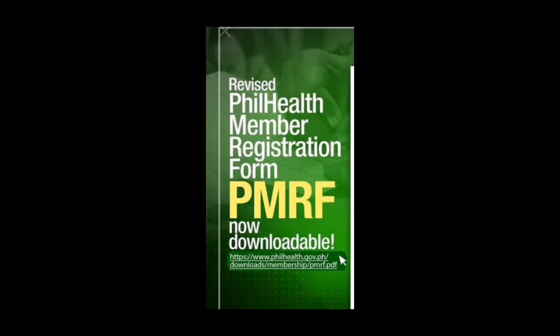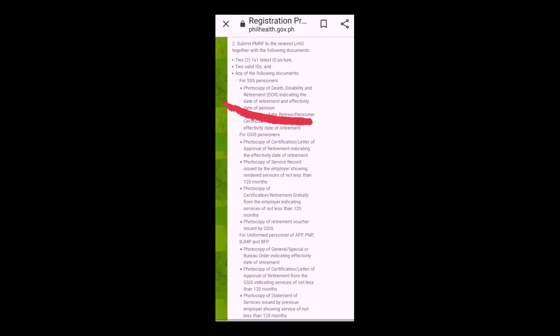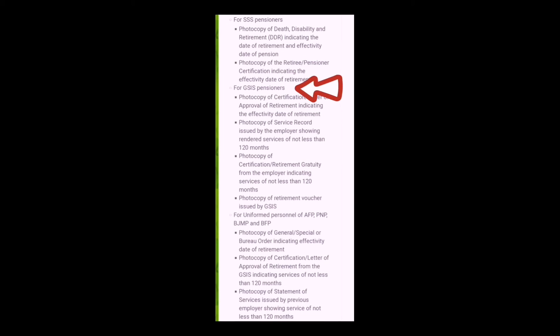The PMRF is also downloadable on the PhilHealth website — you can just download it. After filling up the forms, you need to have two valid IDs and the following documents. If you are an SSS pensioner, you also have to comply with those required documents. The same applies if you are a GSIS pensioner, as well as uniformed personnel, AFP, PNP, and BFP.